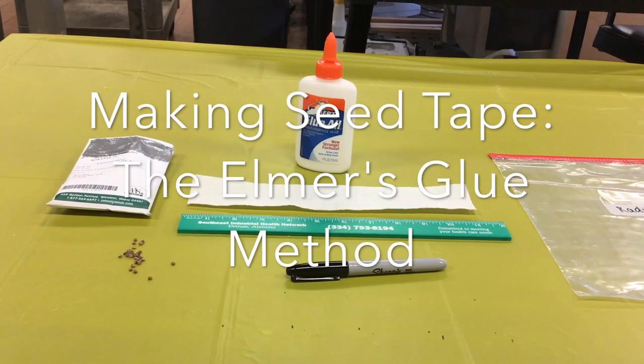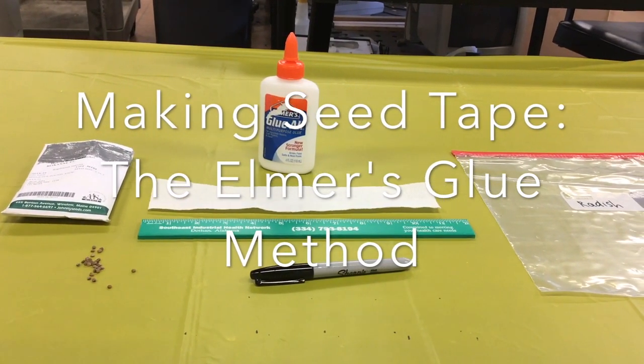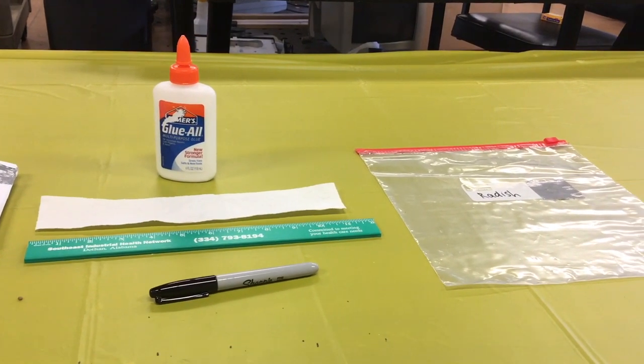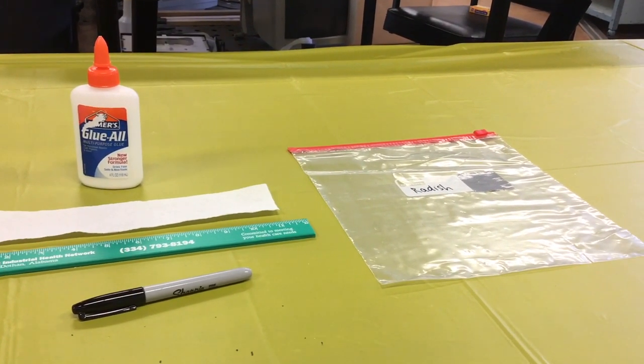The supplies you need will include seeds, Elmer's glue, one-and-a-half to two-inch wide strips of paper towels, a ruler, a permanent marker, and a plastic bag.